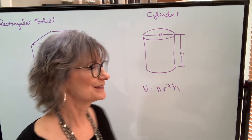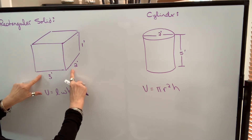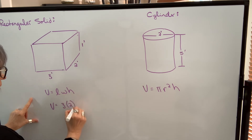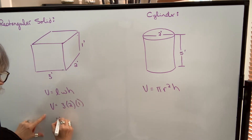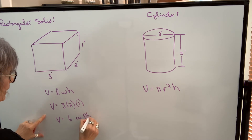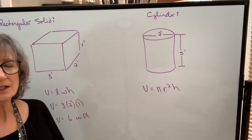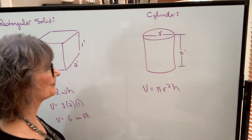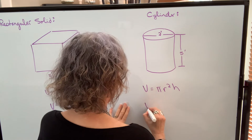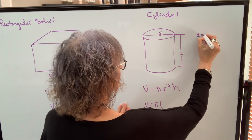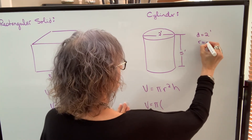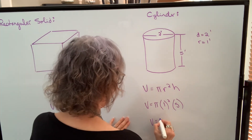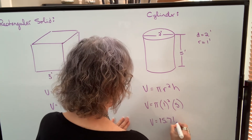Let's do some examples. If I was asked to find the volume of this rectangular solid, it would be three feet by two feet by one foot, which would be six cubic feet. You can put your units in or leave them out and understand that your answer will be cubic feet. To find the volume of the cylinder with diameter two feet — so radius is one foot — one squared times the height of five feet gives a volume of 15.71 cubic feet.